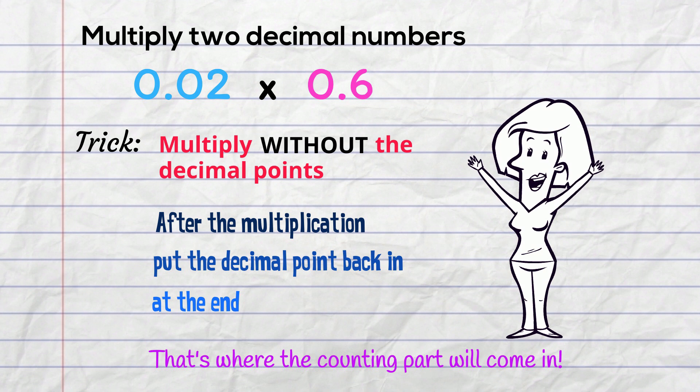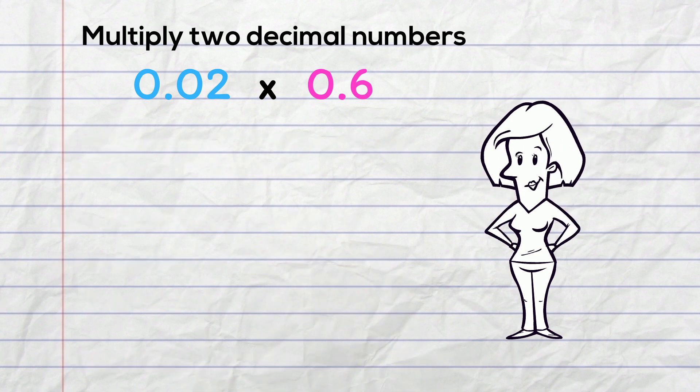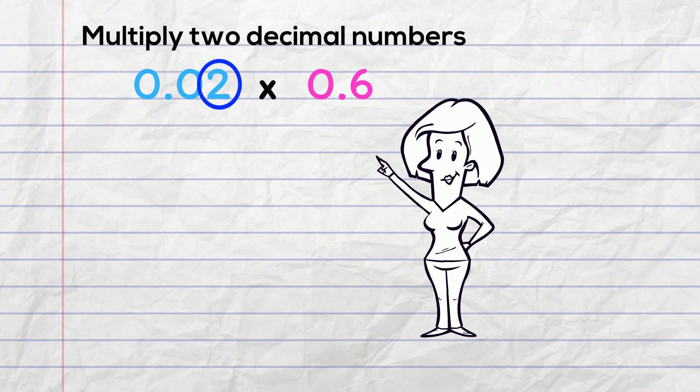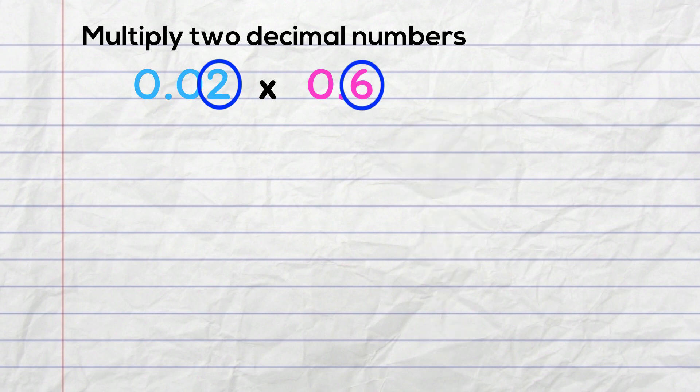And that's where the counting part will come in! We start off thinking about these significant figures, the 2 and the 6. We multiply them together. Of course that's 12!